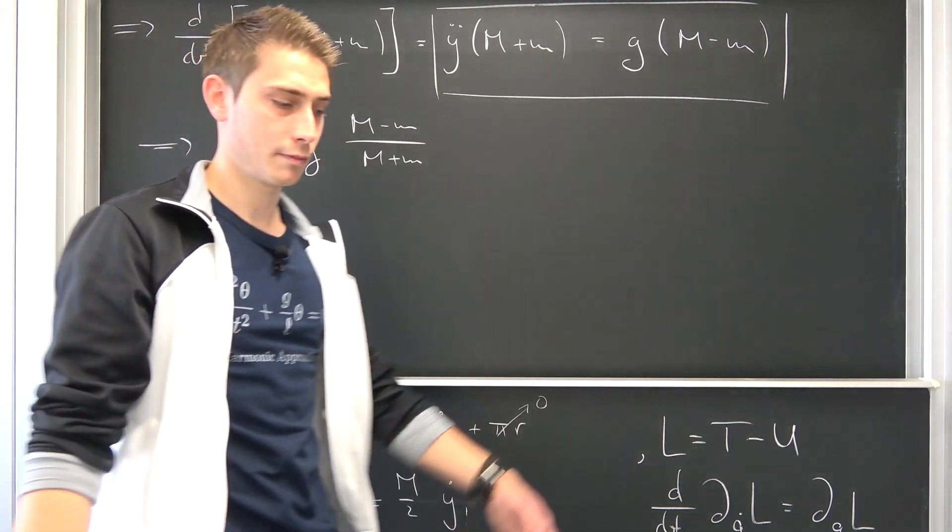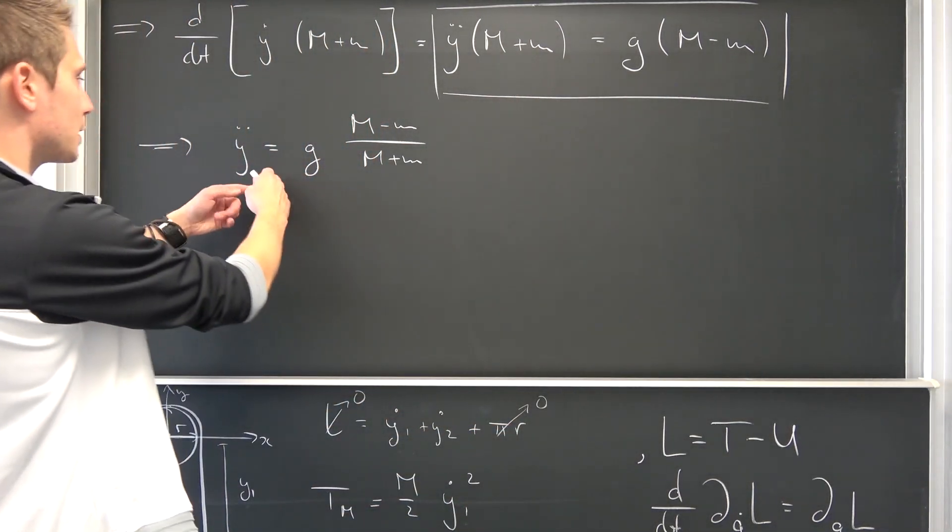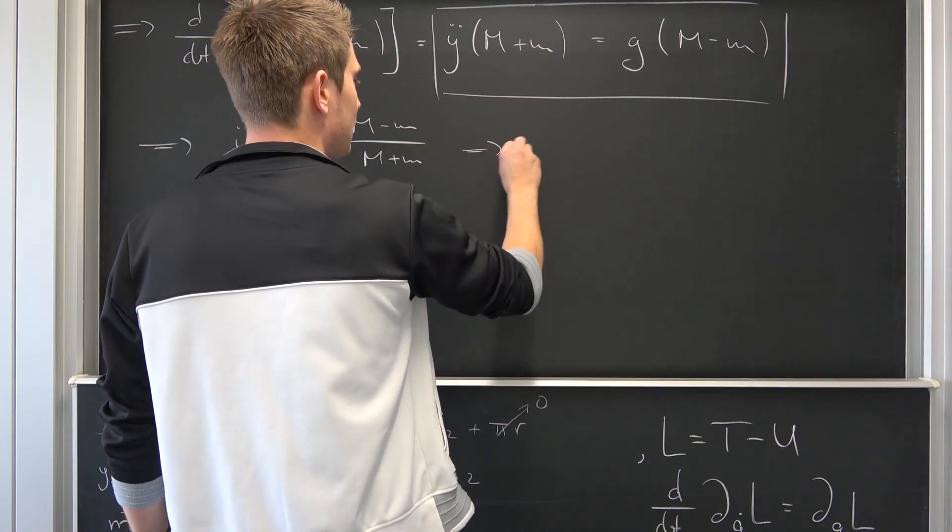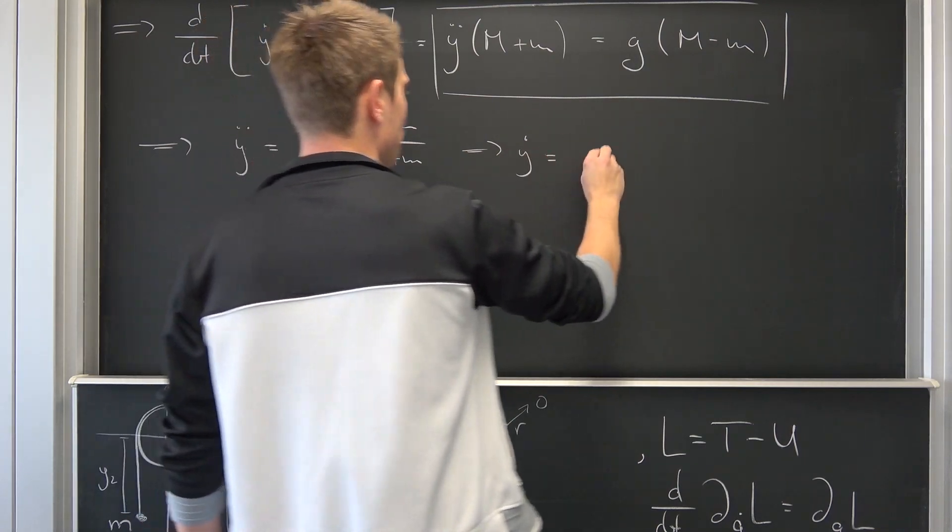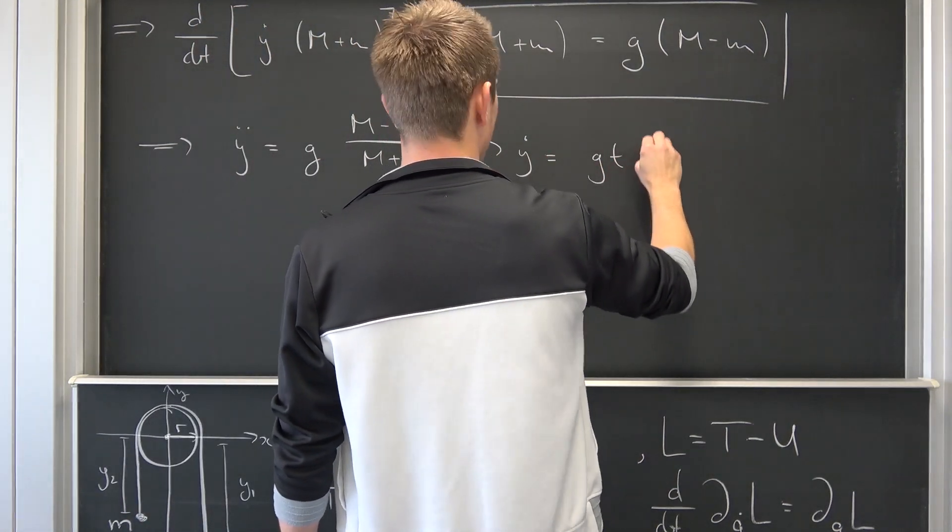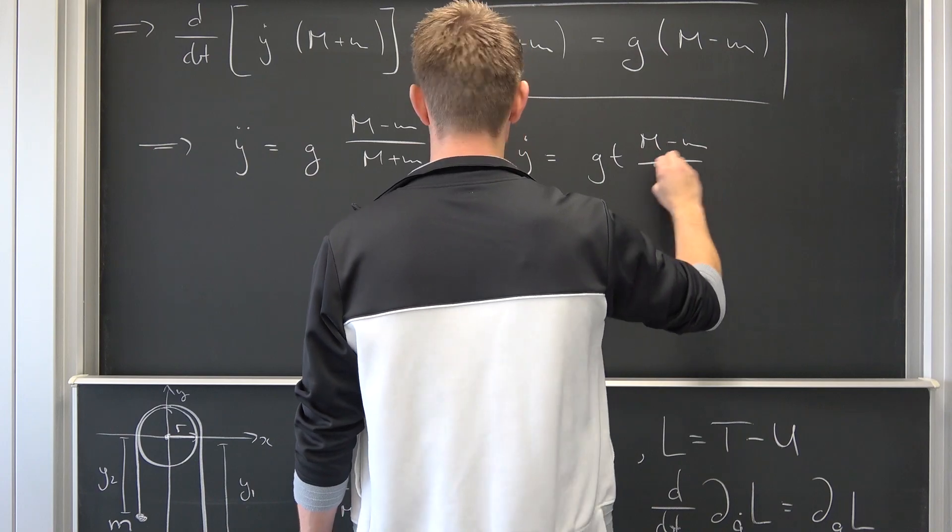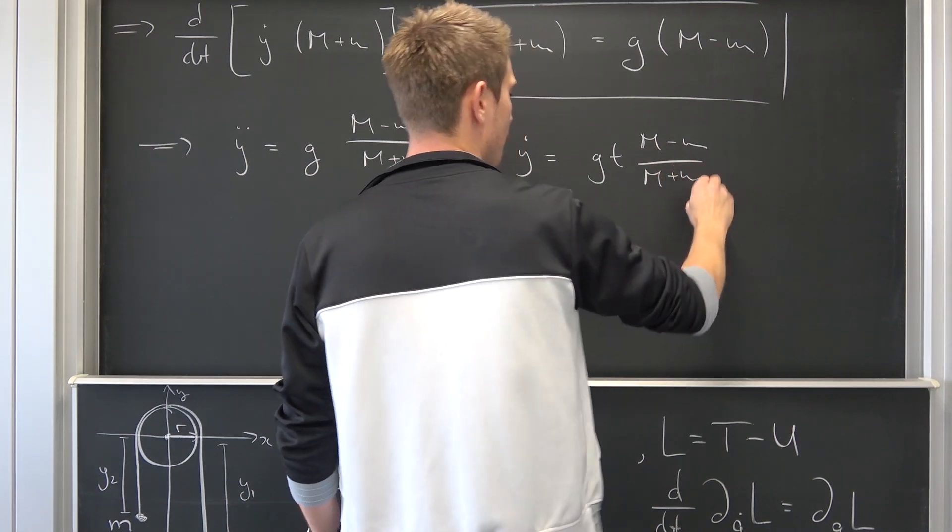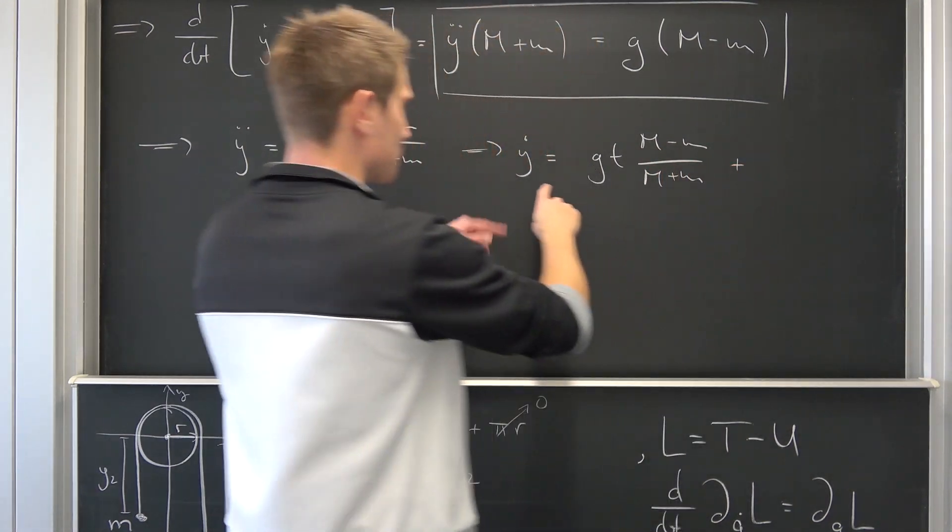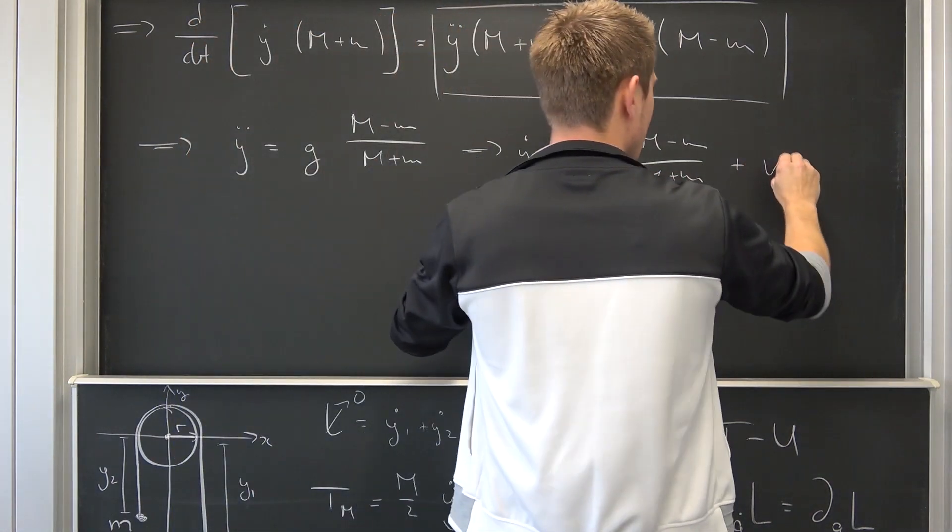And now, just like with the last time with the inclined plane, we can integrate both sides with respect to t, leaving us with Y dot being equal to g times t, M minus m over M plus m, and then plus some initial velocity V naught.